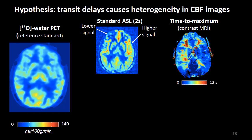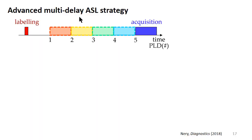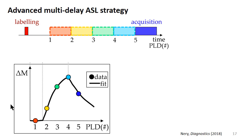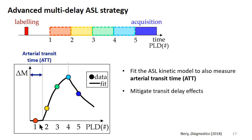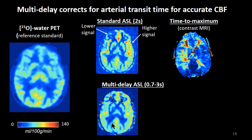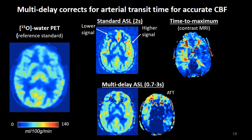The higher signal on the left side might reflect labeled spins still in slow-flowing large vessels, while on the right hemisphere, longer transit delays mean signal hasn't even arrived to the imaging slice. You can test this with a DSC image looking at time-to-maximum, and exactly as predicted, there are delays on either hemisphere but more severely on the right. Using a multi-delay ASL strategy — acquiring five different post-label delays — lets you monitor the kinetics of arterial transit time and correct for it in the CBF map, yielding an image more similar in CBF distribution to the PET.